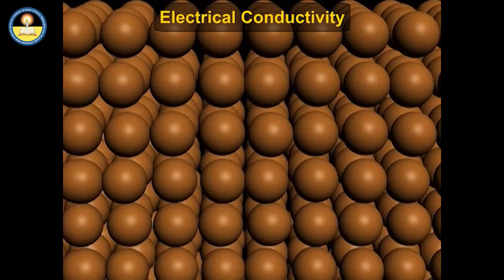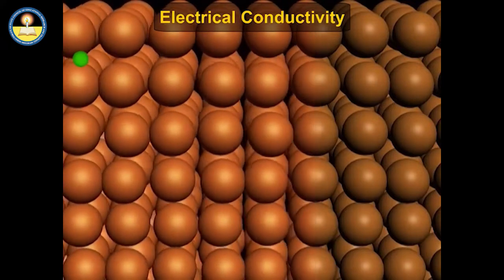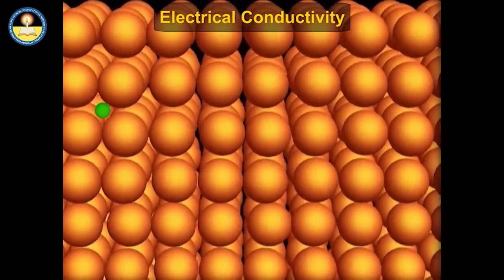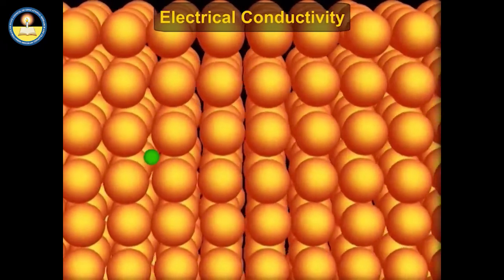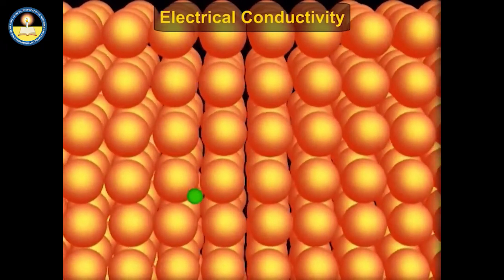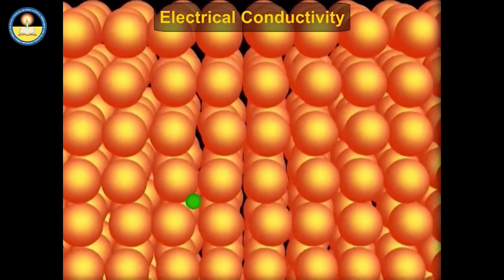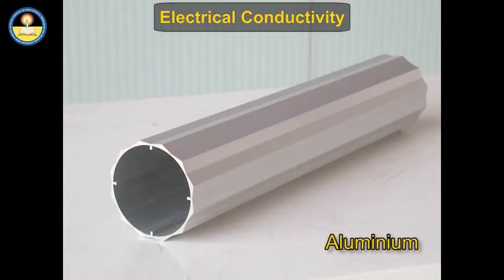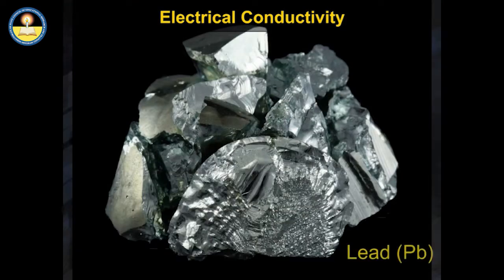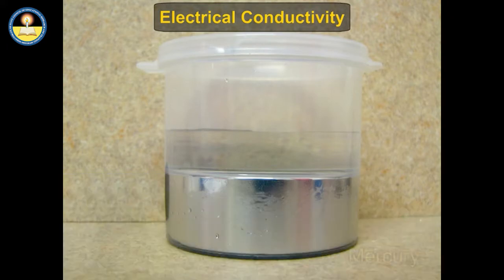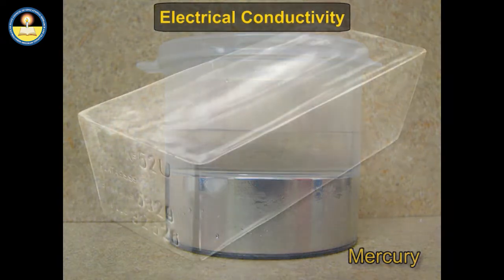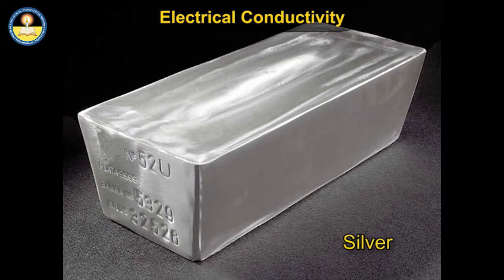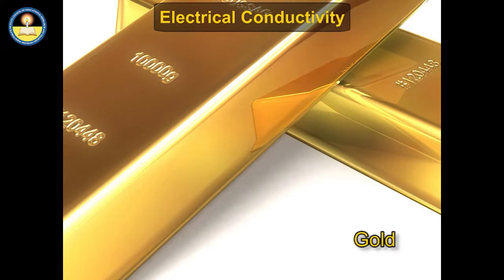The conduction of electricity by metals decreases with rise of temperature because, with increase of temperature, kernels start vibrating, creating hindrance in the flow of electrons. Silver, copper, and aluminium are good conductors of heat and electricity. Lead (Pb) is a poor conductor of electricity. Mercury too is a poor conductor of electricity as it offers maximum resistance to the flow of current. Silver is the best conductor of electricity, followed by copper, gold, aluminium, and tungsten.